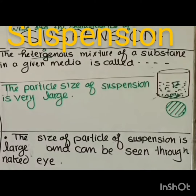A heterogeneous mixture of a substance in a given medium is called a suspension. The particle size of a suspension is very large and can be seen through the naked eye.